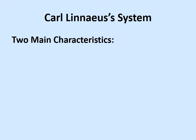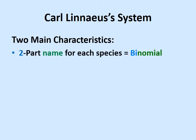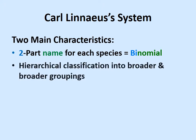Carl Linnaeus is the person who came up with the system that we use today. There are two main characteristics of Linnaeus's system: each species, each unique living thing, has a two-part name. We refer to that as being binomial — 'bi' meaning two, 'nomial' referring to name. So every living thing has a two-part name.